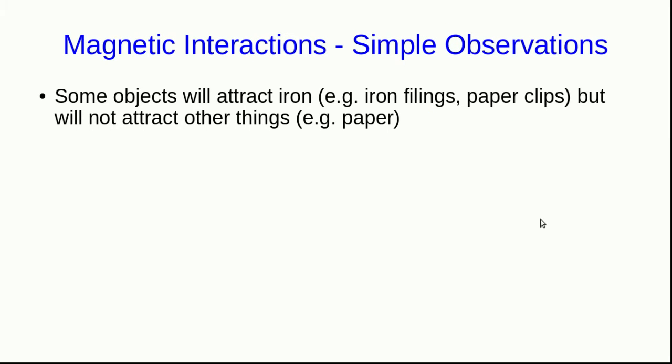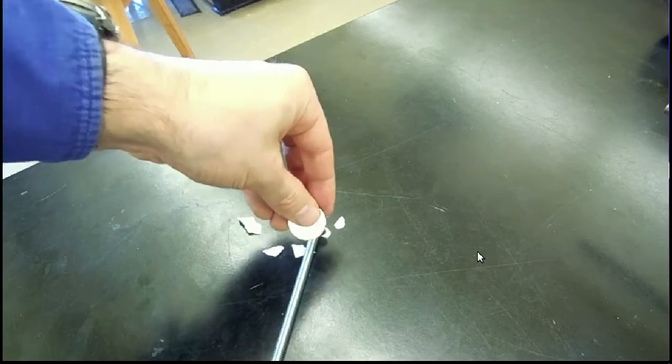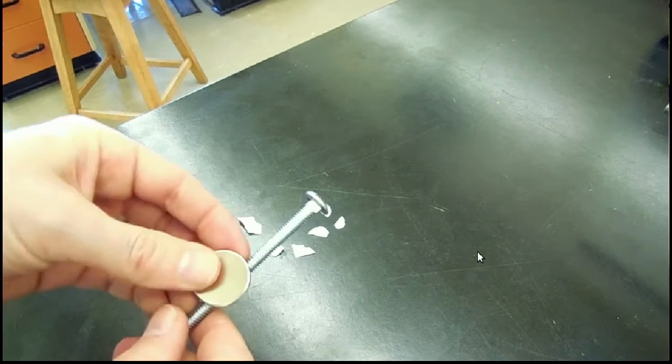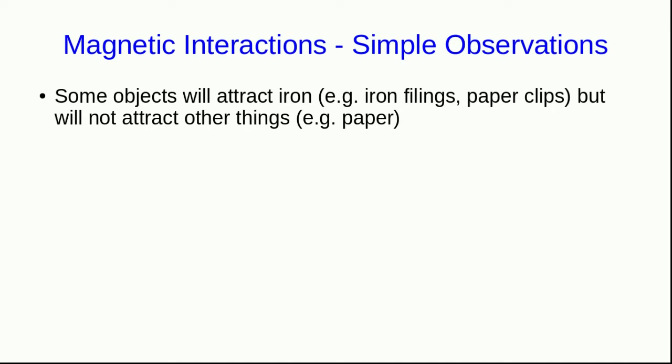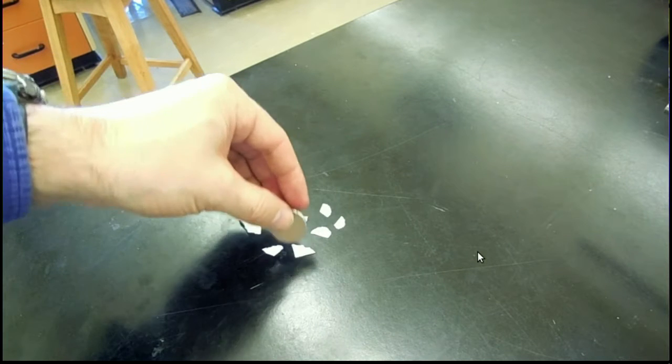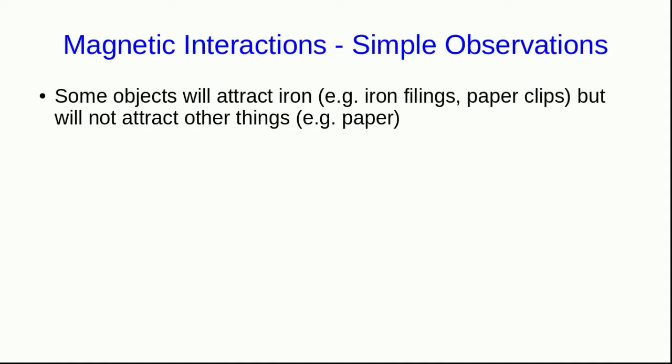We'll start off with the very simple observation that there are some objects which will attract iron objects, such as iron filings, paper clips, nails, bolts, and so on. But these same objects will not attract other things, such as paper. The fact that they won't attract paper tells us that this is not an electric interaction, it's something new. This is a magnetic interaction, and we'll call these objects magnets.